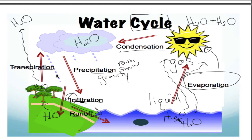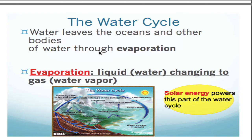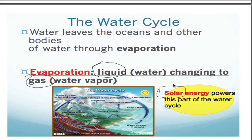Those are the most important processes you're going to need to remember for the water cycle. Going through the definitions — evaporation is when we're taking liquid water and turning it into gas, liquid to gas. That energy comes from the sun, so when you think evaporation, the key player is the sun. Solar energy powers evaporation. That is the only thing working in this part of the process.